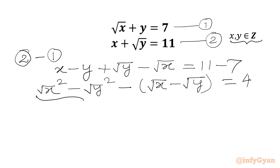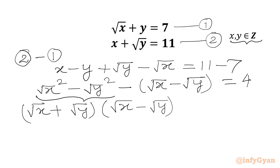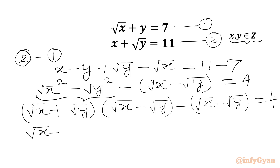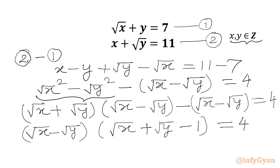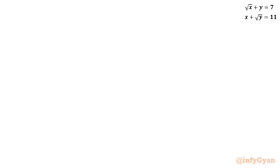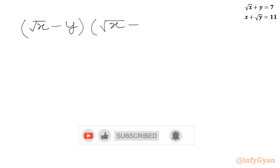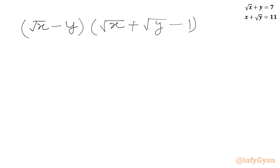Now we can use the difference of two squares formula here. We will write root x plus root y times root x minus root y, minus root x minus root y, equal to 4. Now we will take root x minus root y as a common factor, so in the other bracket we write root x plus root y minus 1, equal to 4.